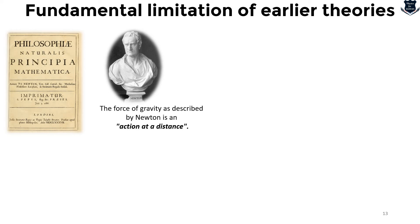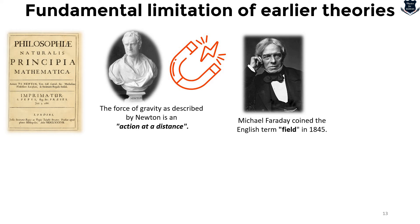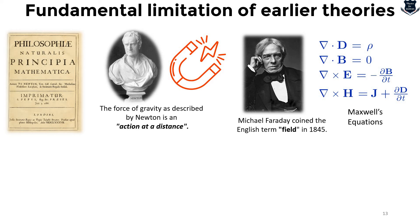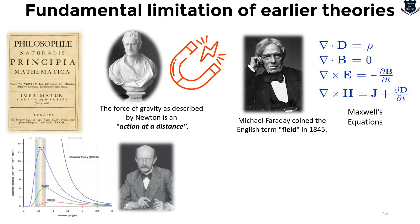Fields began to take on existence of their own with the development of electromagnetism in the 19th century. Michael Faraday coined the term 'field' around 1845 and introduced fields as properties of space. The theory of classical electromagnetism was completed in 1864 with Maxwell's equations, describing the relationship between the electric field, the magnetic field, the electric current, and electric charge — Maxwell actually united them.